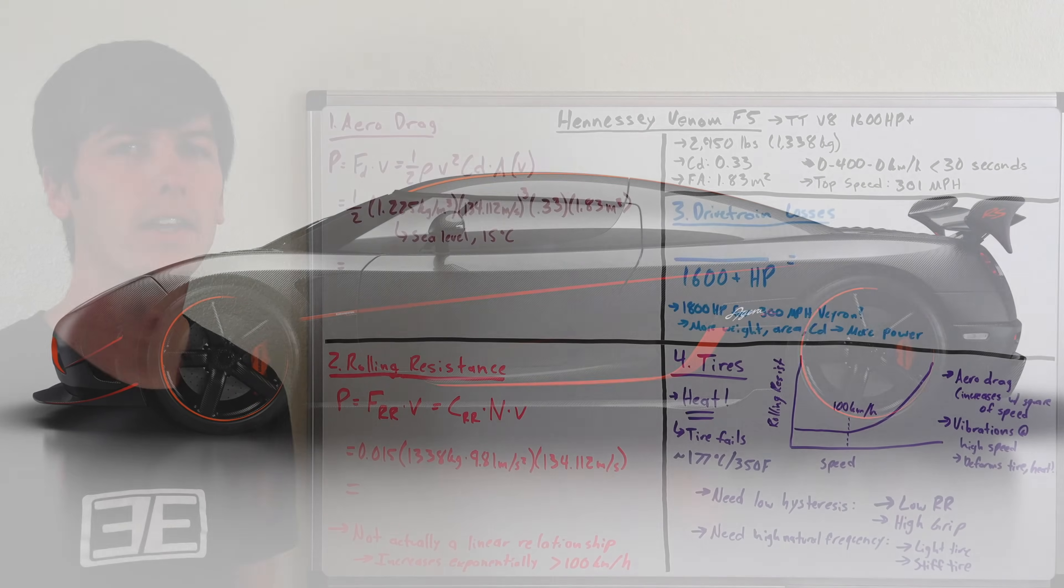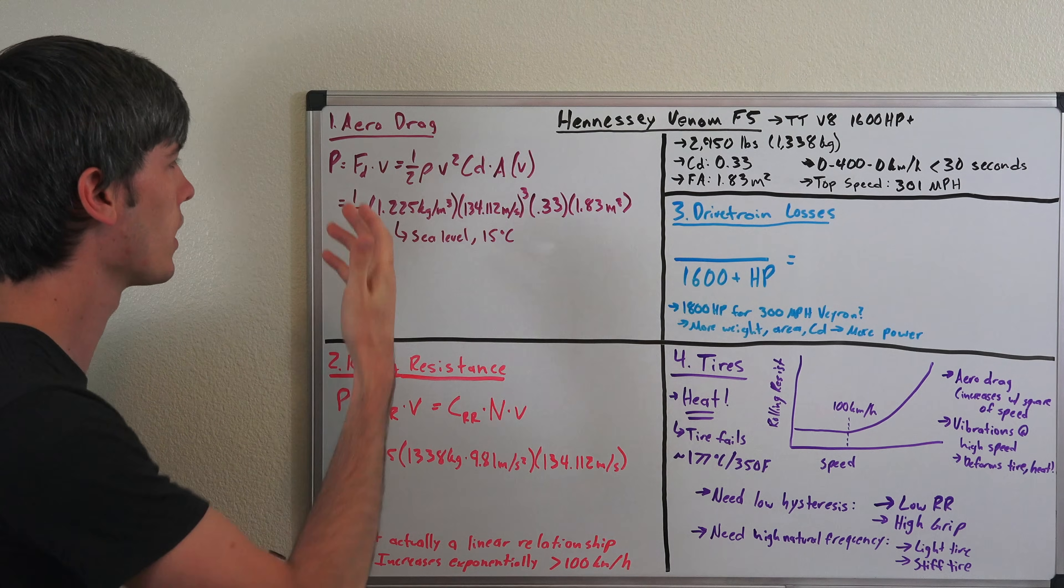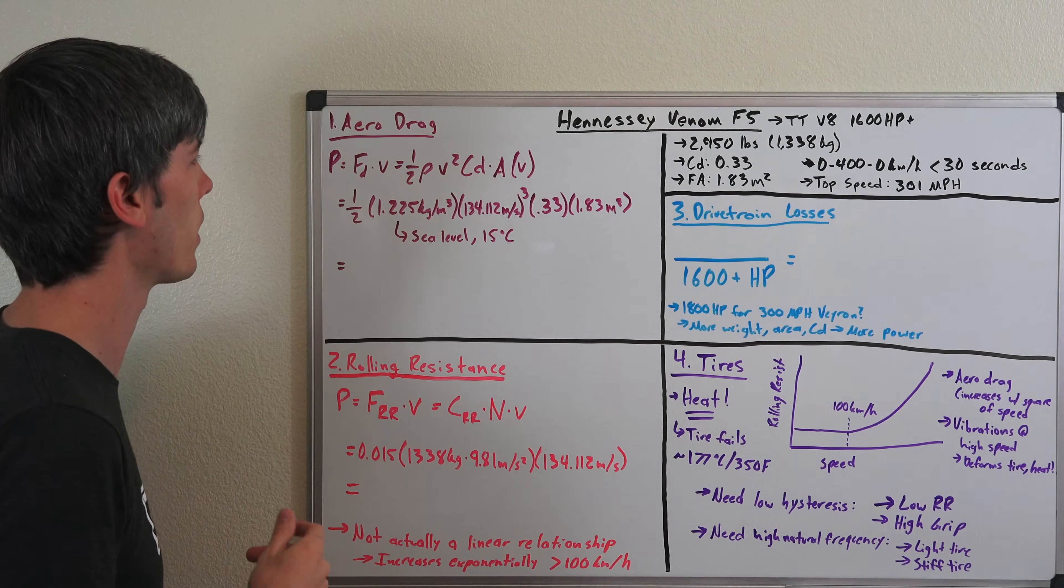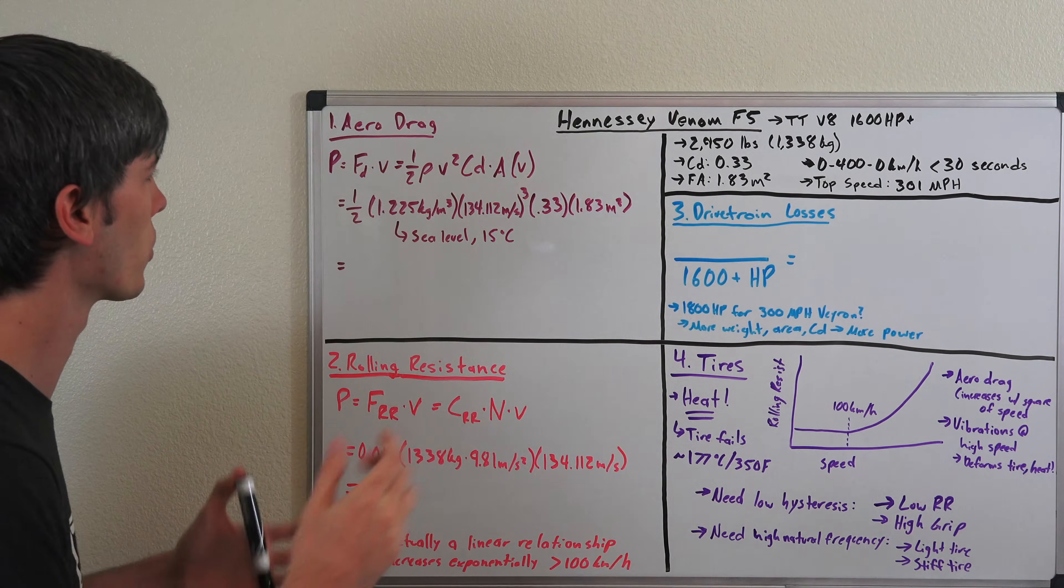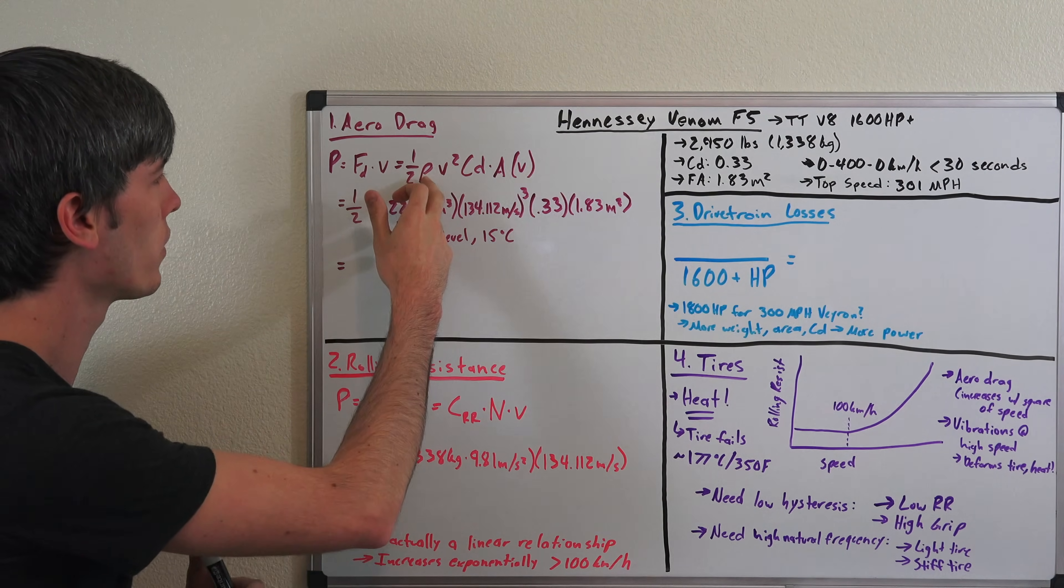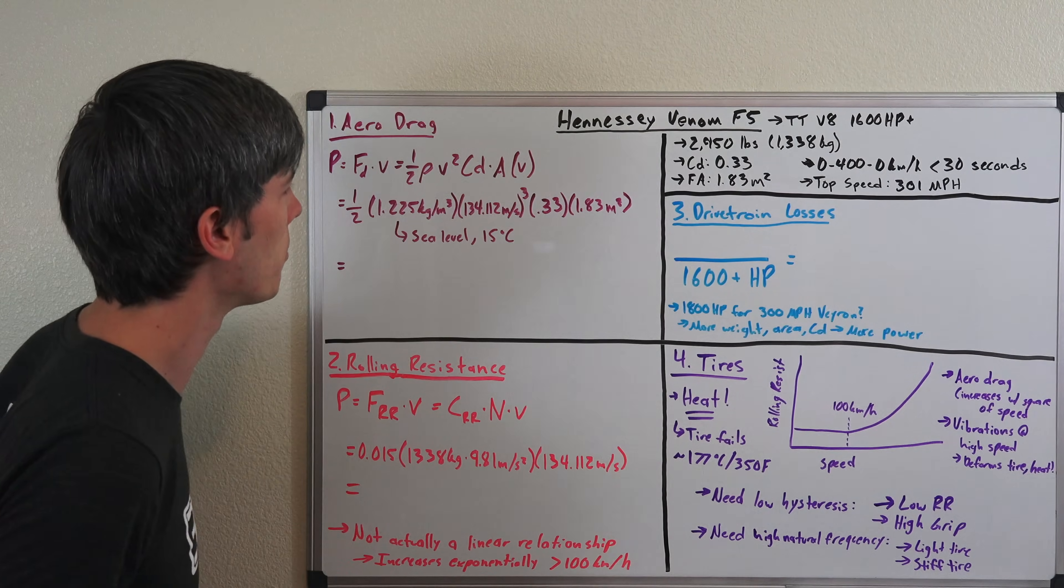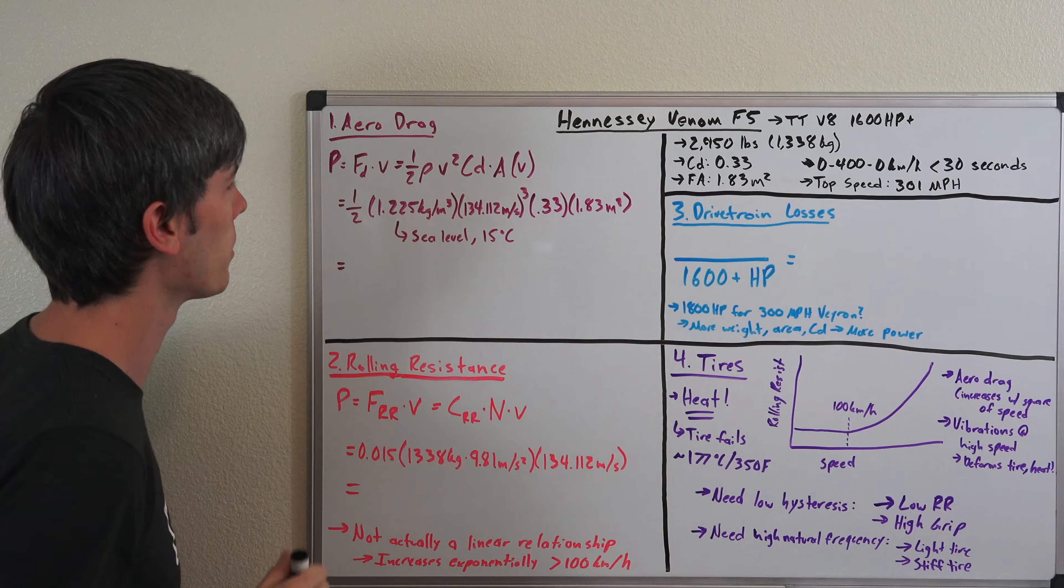Starting things off with aerodynamic drag. To calculate how much power you need to overcome drag, this is equal to the force of drag multiplied by the velocity at which you're traveling—in this case, 300 miles per hour. The force of drag is equal to one-half ρ (the density of air) times V squared times velocity times coefficient of drag times your area.